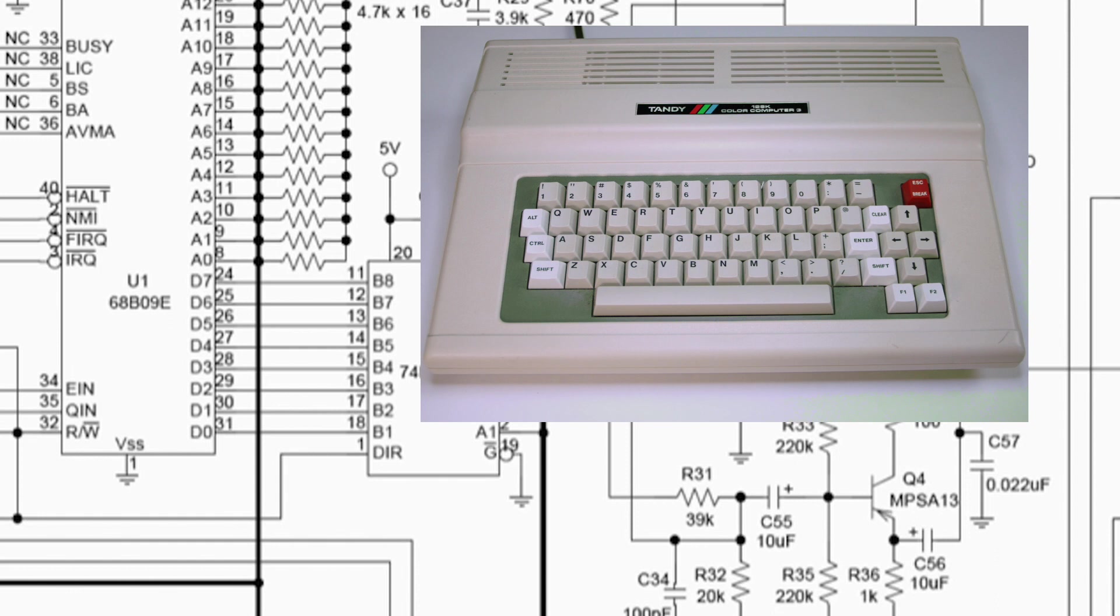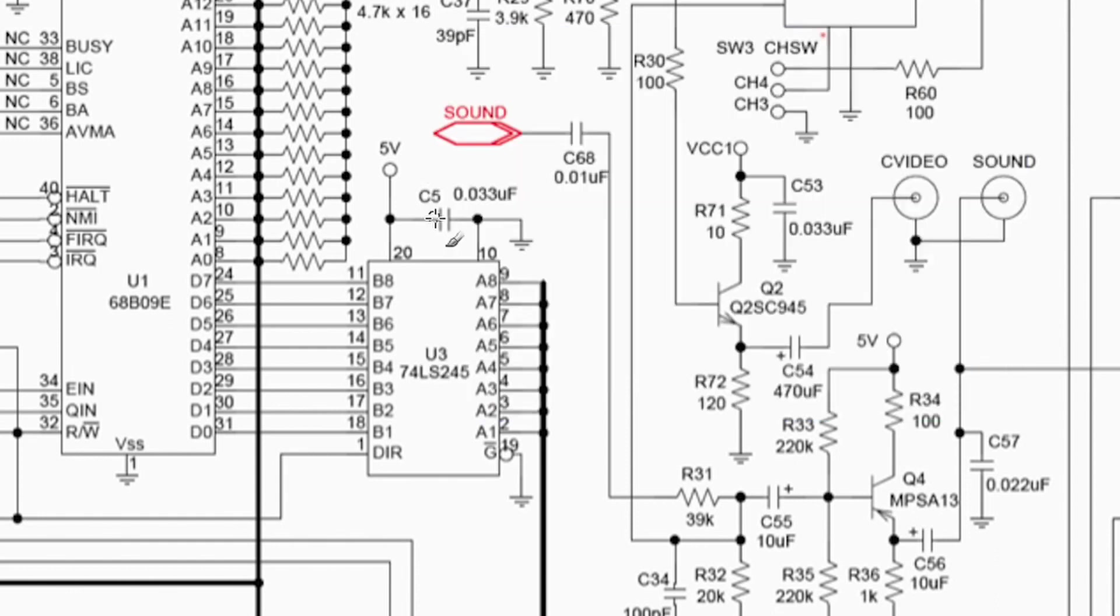The RadioShack Color Computer 3 CPU has a good example of a buffer in use. All of the data lines on the CPU here are all buffered through this 74LS245 chip. Now this is technically a tri-state buffer but pin 19 is grounded out so it is never tri-stated. The direction of the data flow is controlled by pin 1 this direction pin which is tied directly to the read write pin on the CPU. This is basically a two-way buffer allowing the CPU to write out to the data bus and receive data back while still being isolated from it.